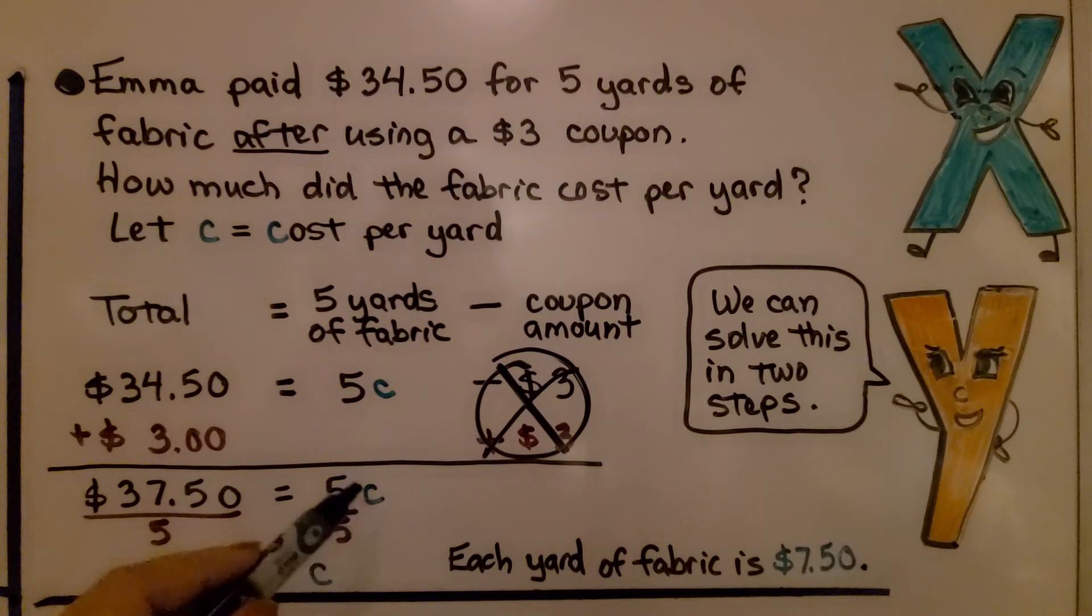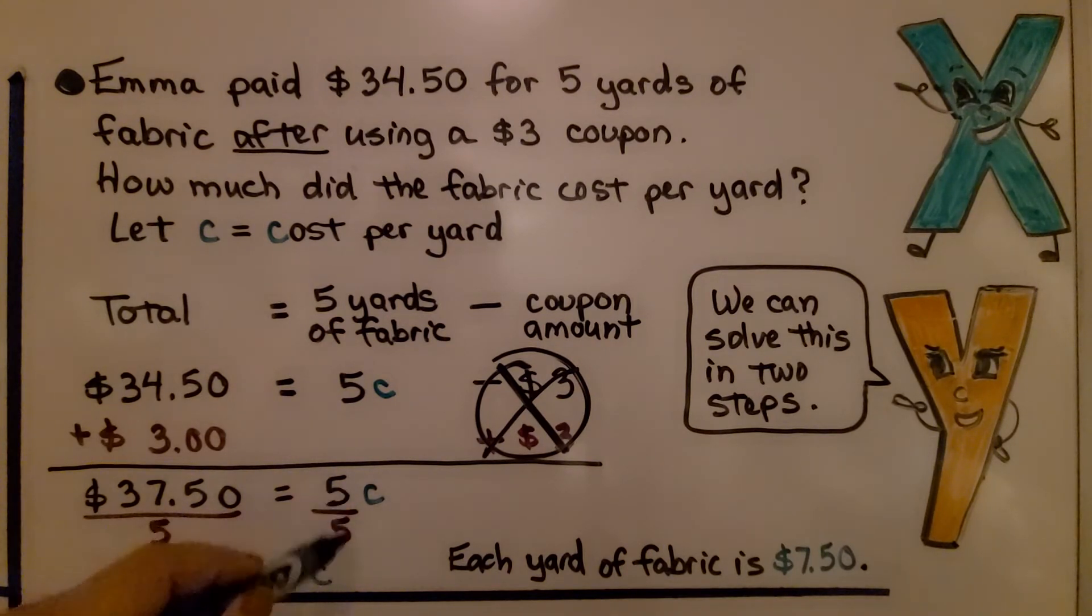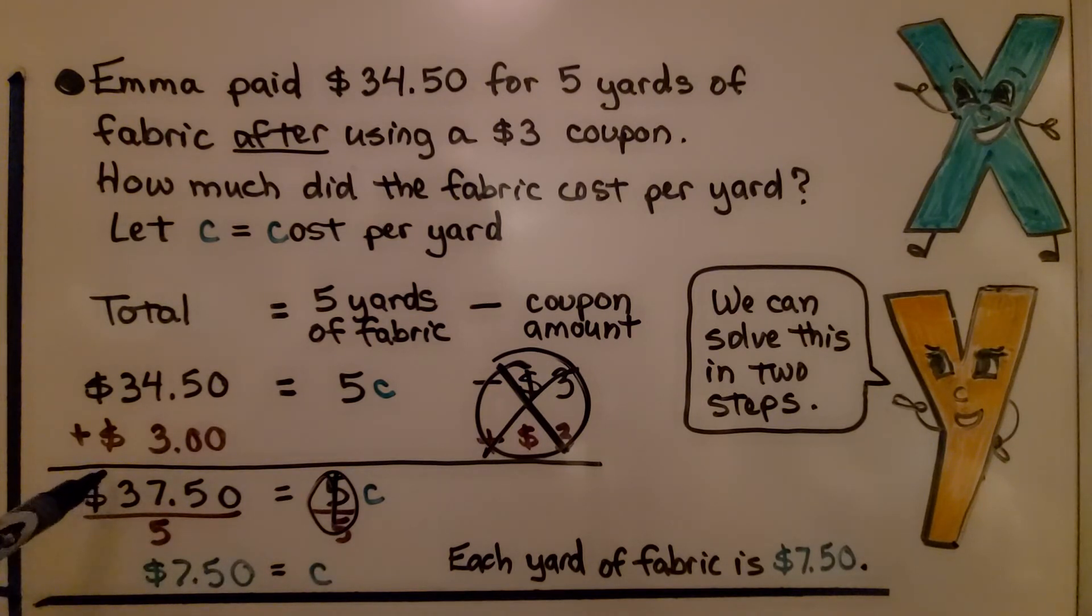So now we're just left with $37.50 equals 5C. Now notice that our total is on this side and our variable and coefficient are on this side. It doesn't matter. We can still isolate the variable to find its value. We have a 5 for our coefficient. So we're going to divide each side by 5. That gives us the same numerator and denominator here as a fraction. It's going to make it a 1. So we have 1C and $37.50 divided by 5 is $7.50. That tells us each yard of fabric is $7.50.